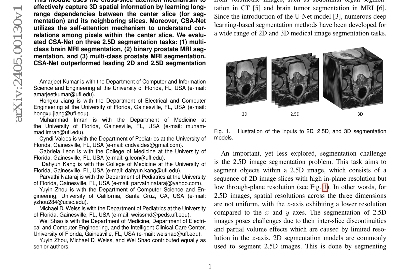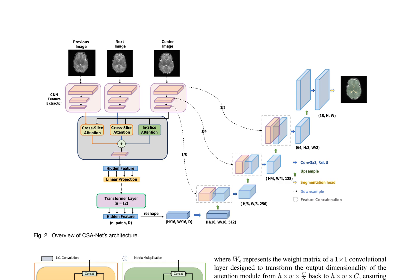The model also utilizes an in-slice attention module, which learns correlations between different regions within the center slice via pixel-level self-attention. The output of the in-slice attention module is formulated as equation 2, where the query, key, and value matrices are computed using three 1×1 convolutional layers. Multiple attention heads are utilized to capture different types of pixel correlations.